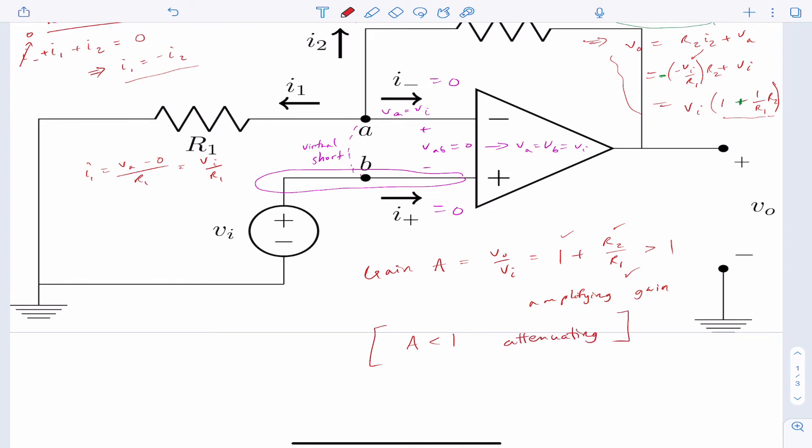Also, it could be less than zero, let's say less than negative one, maybe not this circuit, but another circuit, you could have a gain less than negative one. And so that would be inverting and amplifying. Because of the negative sign, that's the inverting. And then the absolute value greater than one, that's amplifying.